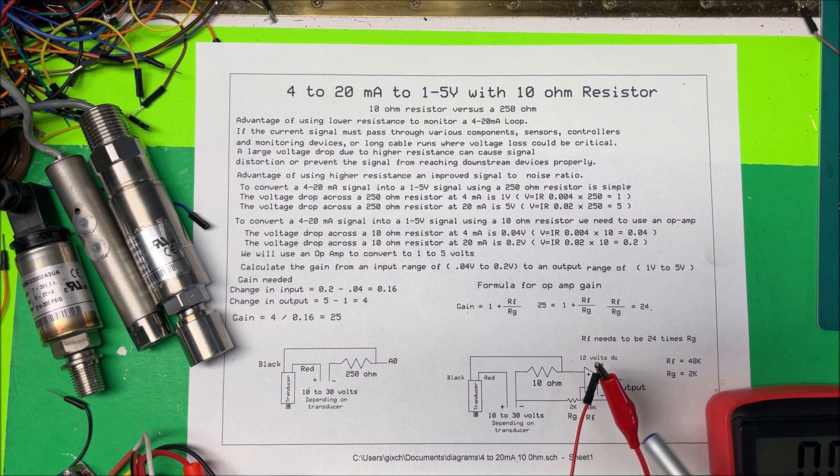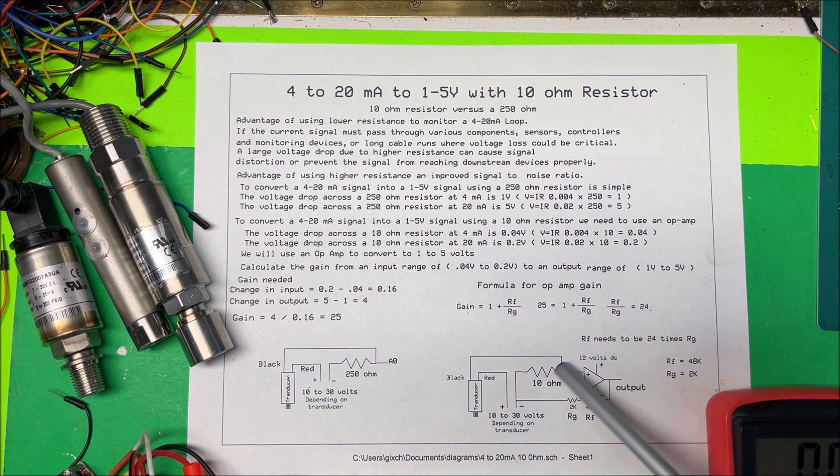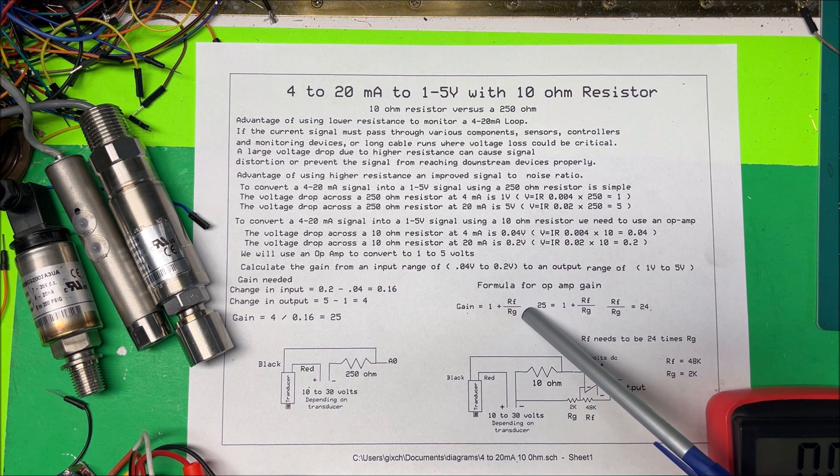So in this op amp here, you can see that I'm going to put it on the non-inverting input. This is how I'm hooking it up. The gain is equal to 1 plus Rf over Rg.